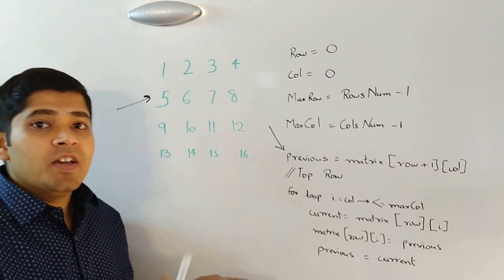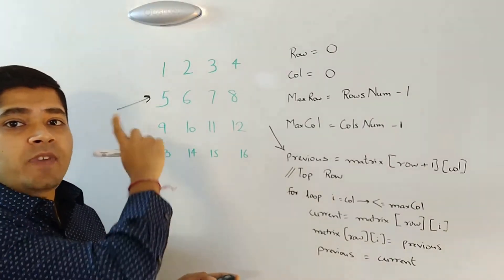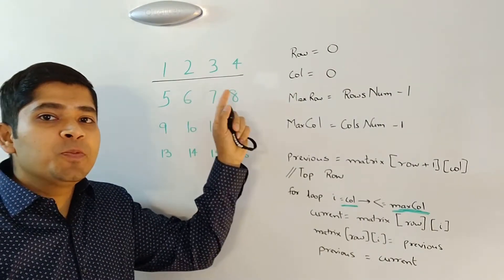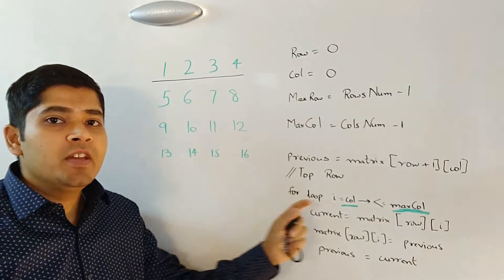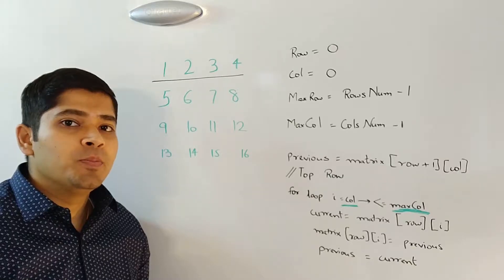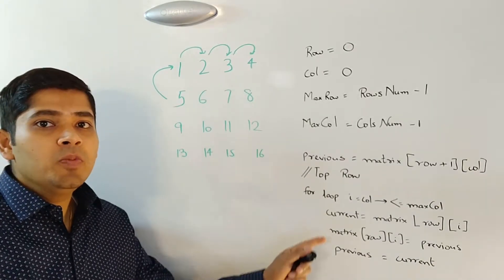So as we discussed, we start off with reading this value 5 in the variable previous. Then, we loop through the top row and the variables column and max column help us keep track of our first for loop. And in this for loop,